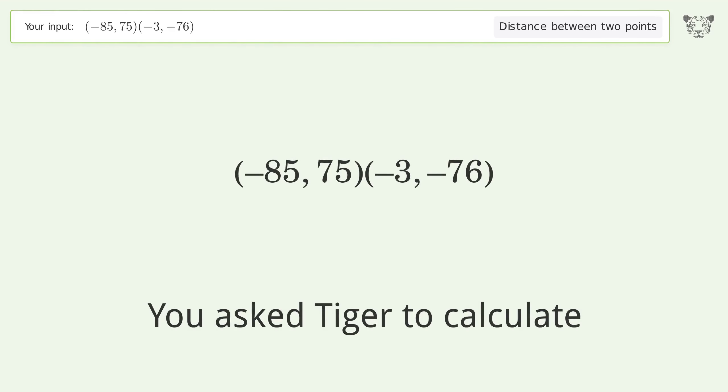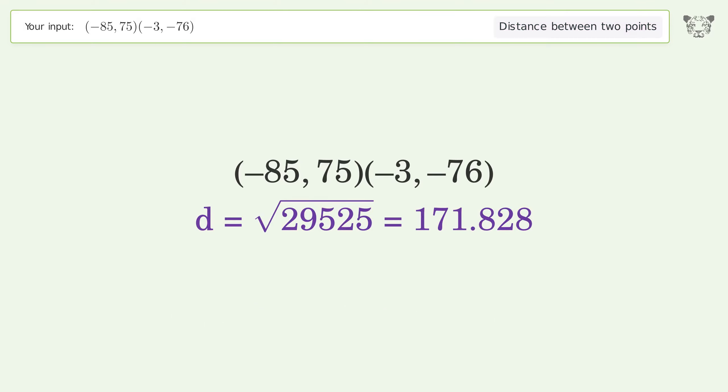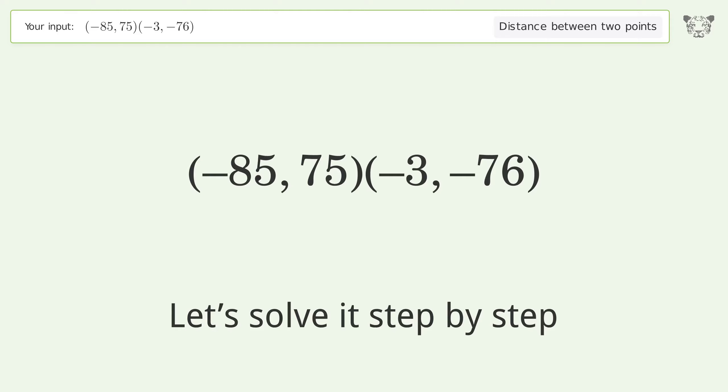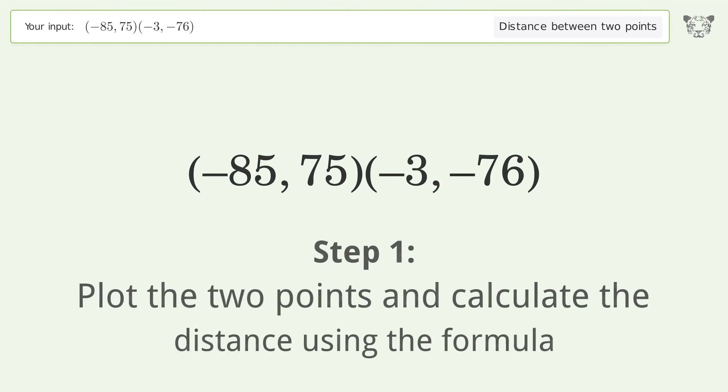You asked Tiger to calculate the distance between two points. The distance is the square root of 29,525, or 171.828. Let's solve it step by step by plotting the two points and calculating the distance using the formula.